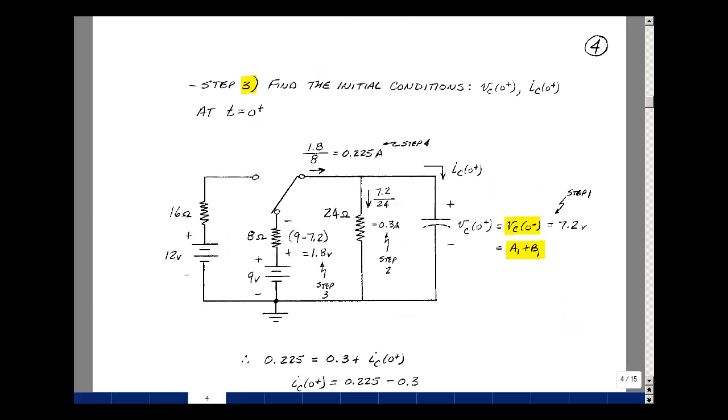Step 3 is to find the initial conditions. That would be the capacitor voltage and the capacitor current just after we change state. Now the voltage across the capacitor just before we switched was 7.2 volts. It must still be that value.